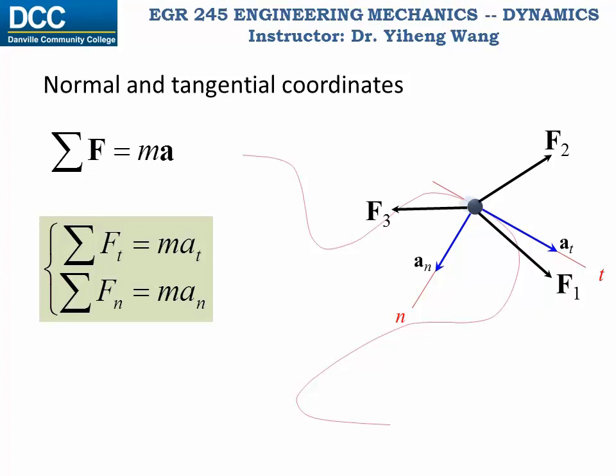Remember, when studied using normal and tangential coordinates, motion only occurs within an oscillating plane. Therefore, there is no motion along the binormal direction, which is the direction perpendicular to the NT plane. Therefore, the resultant force along the binormal direction is always zero.